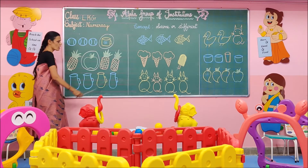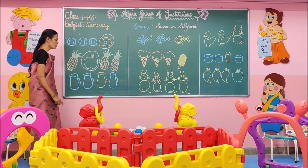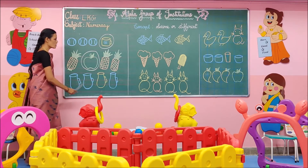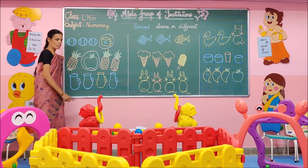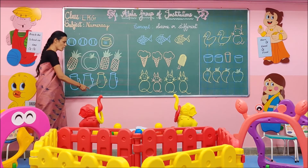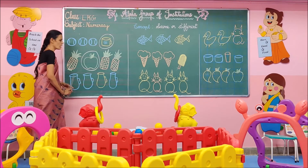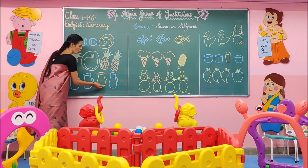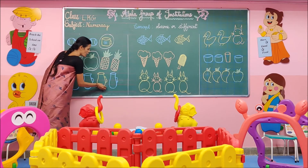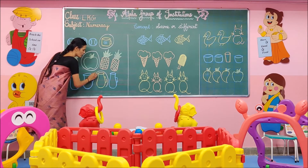Which one is different in this group? All the ducks are blue in color. This one only is yellow in color. So it is different. So I am going to circle around that yellow one.